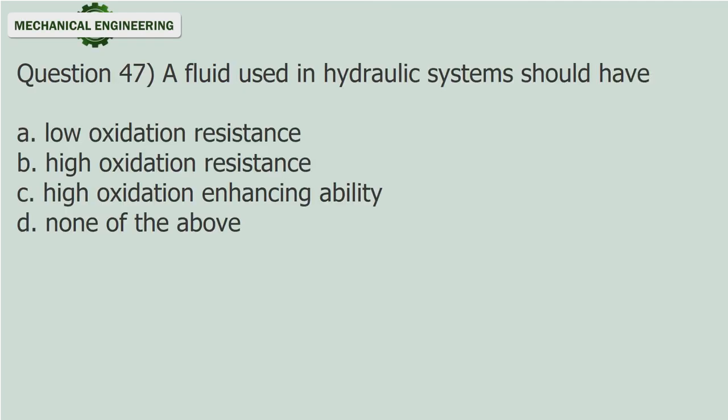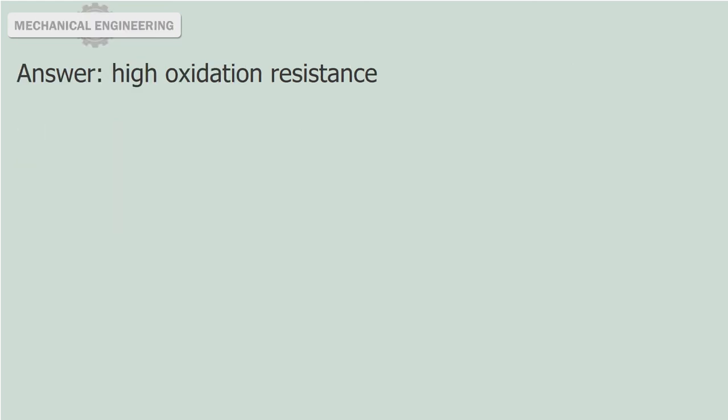Question 47: A fluid used in hydraulic systems should have: A. Low oxidation resistance. B. High oxidation resistance. C. High oxidation enhancing ability. D. None of the above. Answer: High oxidation resistance.